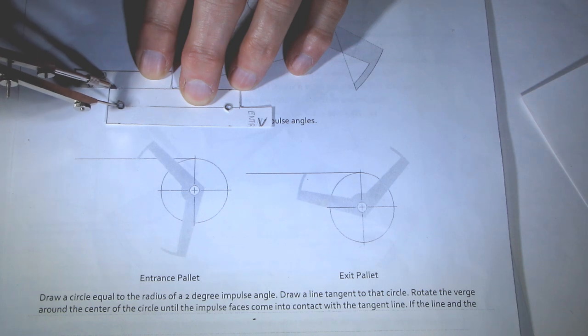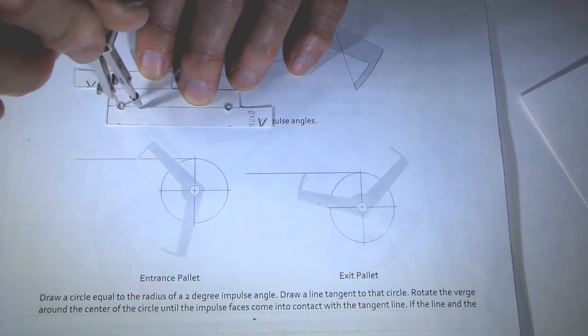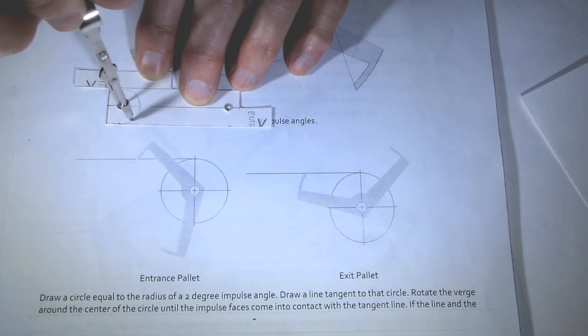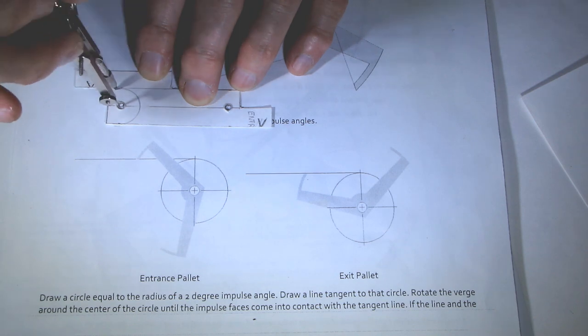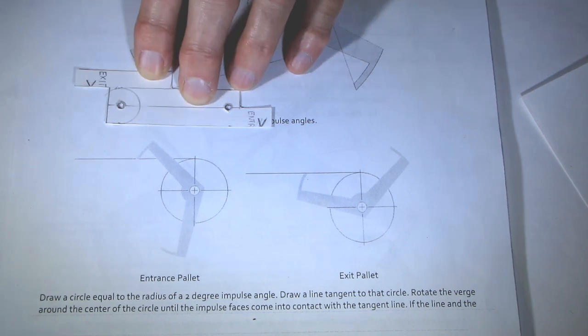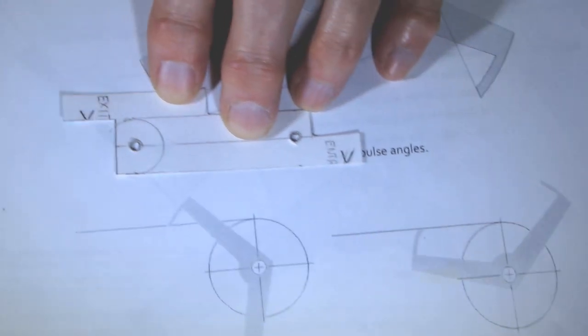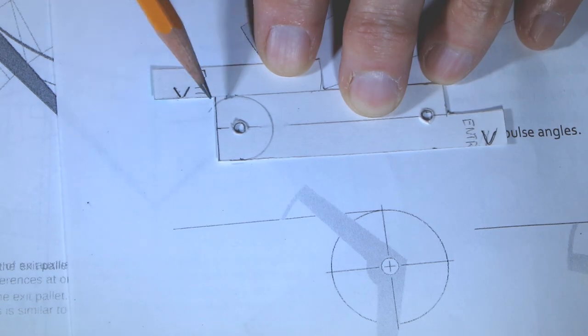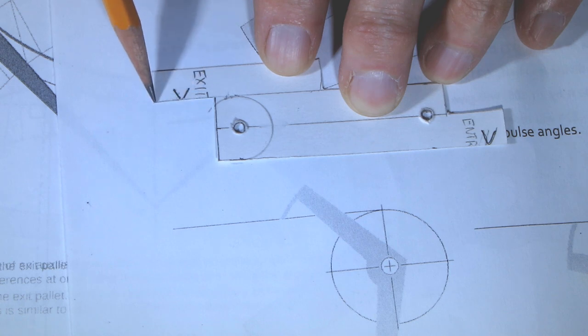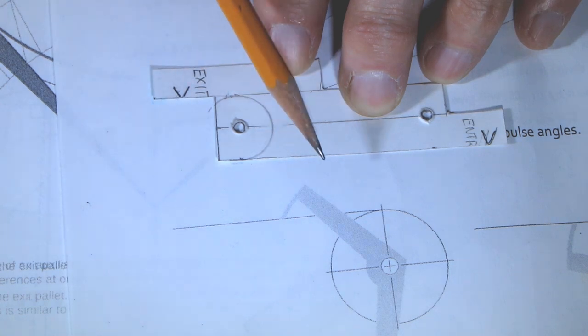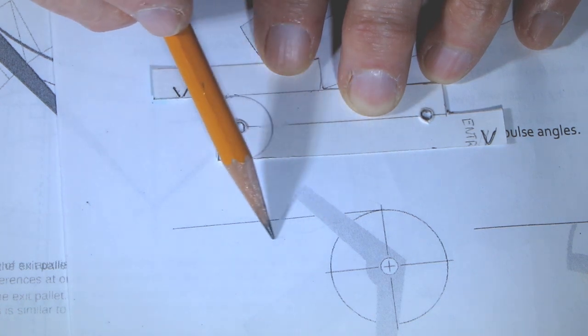And if I make a circle with a radius equal to the half distance between the arbor and a middle point of the impulse face, then I will get the place where I strike the tangent, and it will define the proper lift angle for the impulse face.